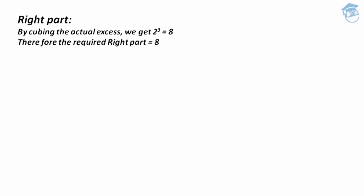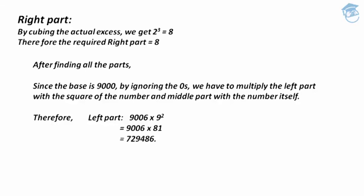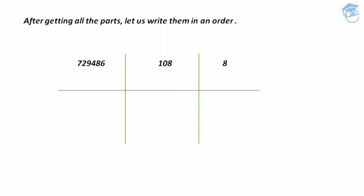After finding the left, middle, and right parts, the base taken is 9000. By ignoring all the zeros in the base, we get the number 9, and we multiply the left part by 9 squared and the middle part by 9. So the left part is 9006 × 81 = 729,486, and the middle part is 12 × 9 = 108. Since the base 9000 has three zeros, we take only three digits in the right and middle parts.